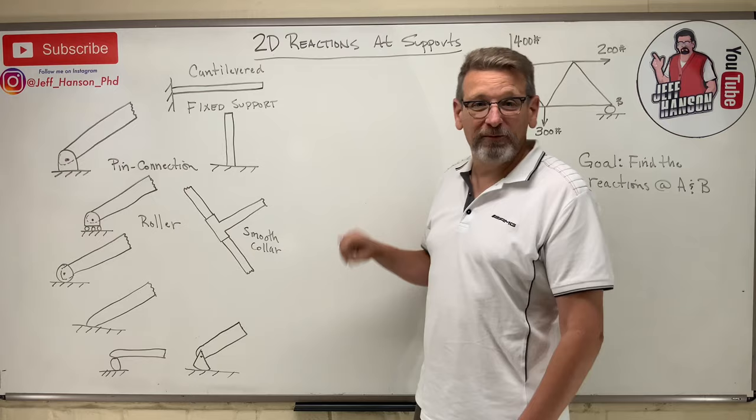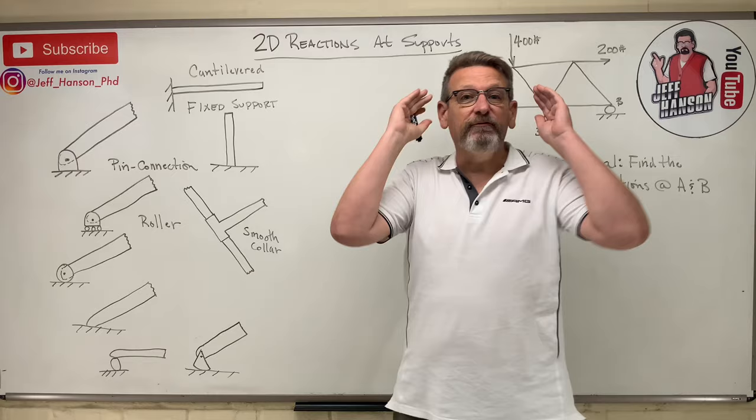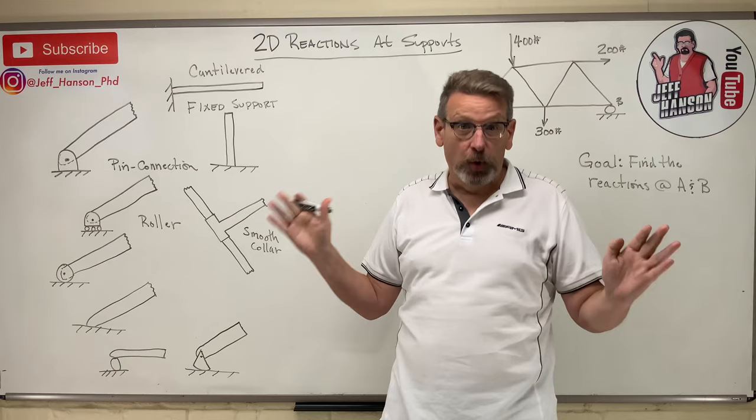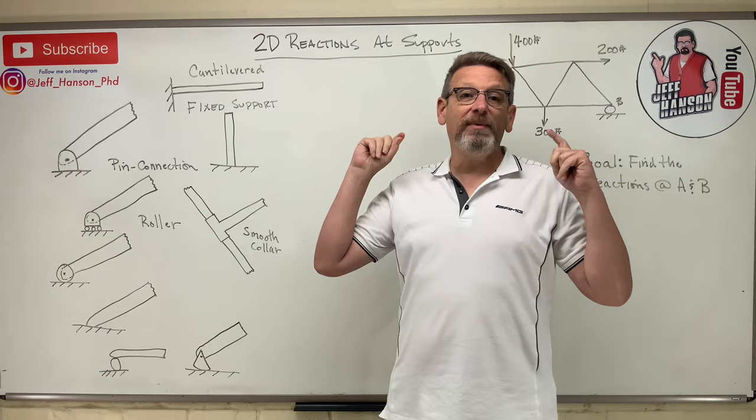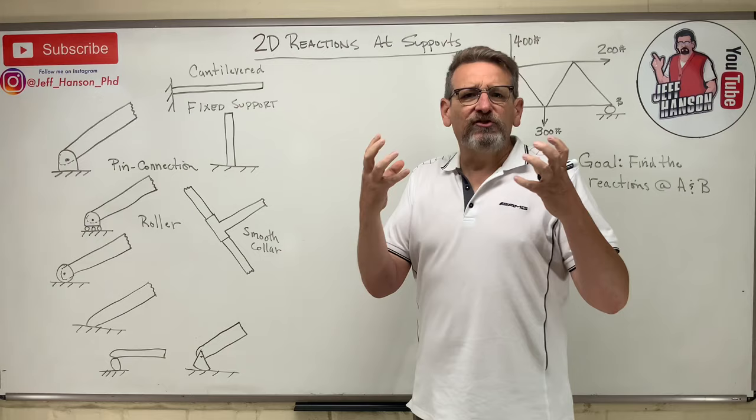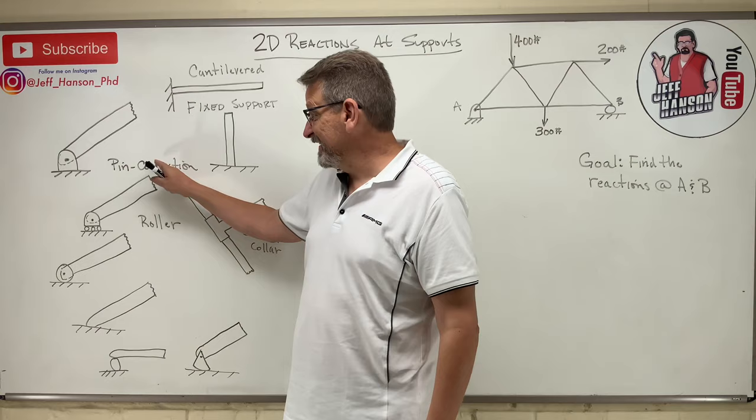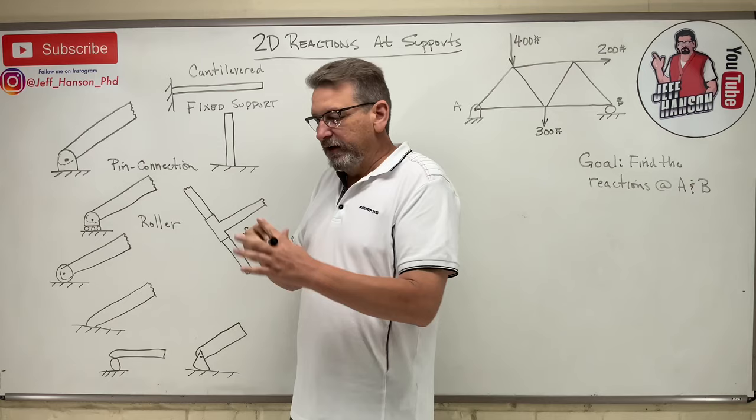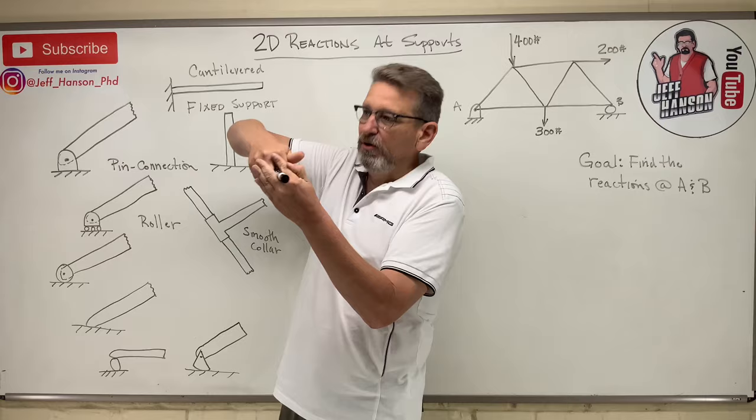We are moving on to Chapter 5, which is about reaction forces. This is the first time this semester we're talking about finding reactions at supports. I want to talk about 2D supports and what they look like — how things are attached to the world. The most common is probably a pin connection. Imagine a steel plate with a pin through it: it can rotate freely, but you can't move it in the x or y direction.